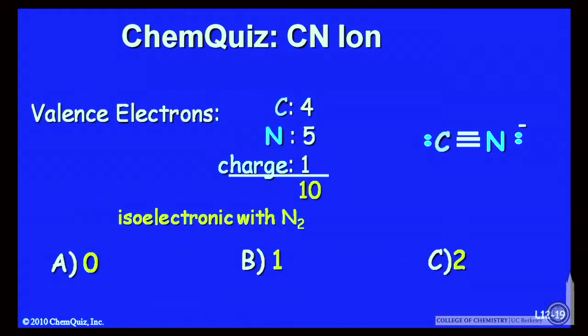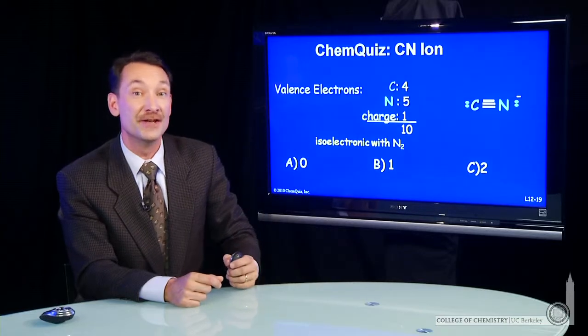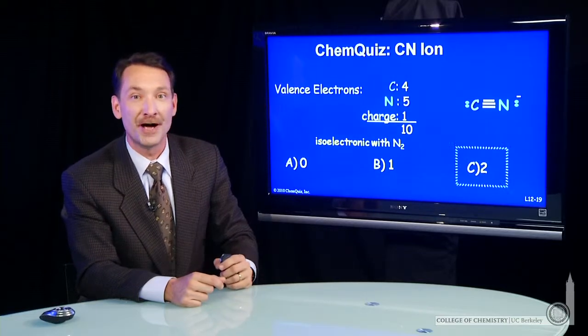I have two lone pairs and three pairs used in bonding. CN minus isoelectronic with N2 is a triple bonded structure.